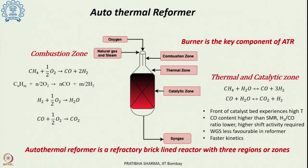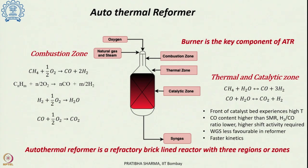The autothermal reformer is a reactor that must sustain very high temperatures and pressures because both partial oxidation and reforming occur in the same reactor. There are three regions: region 1 is the combustion zone, followed by a thermal zone, and then a catalytic zone.